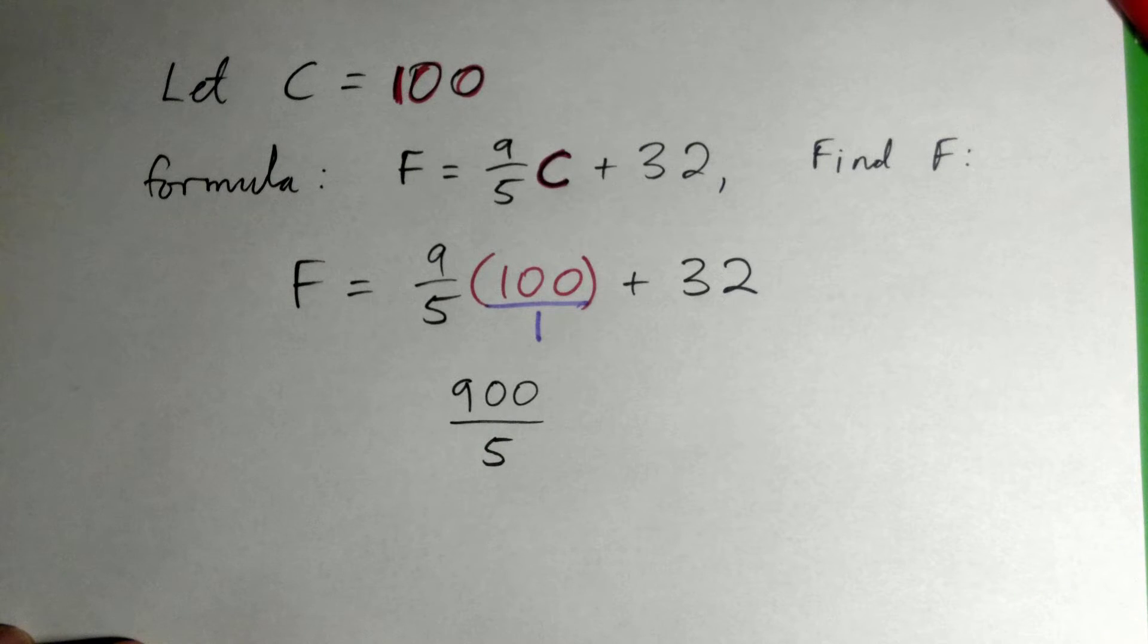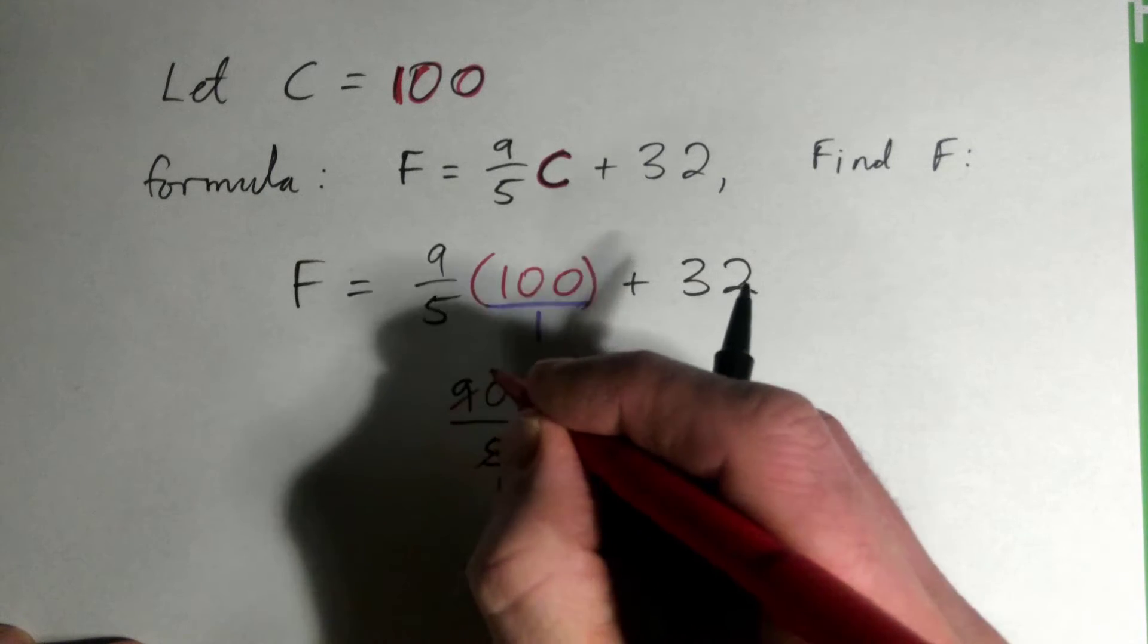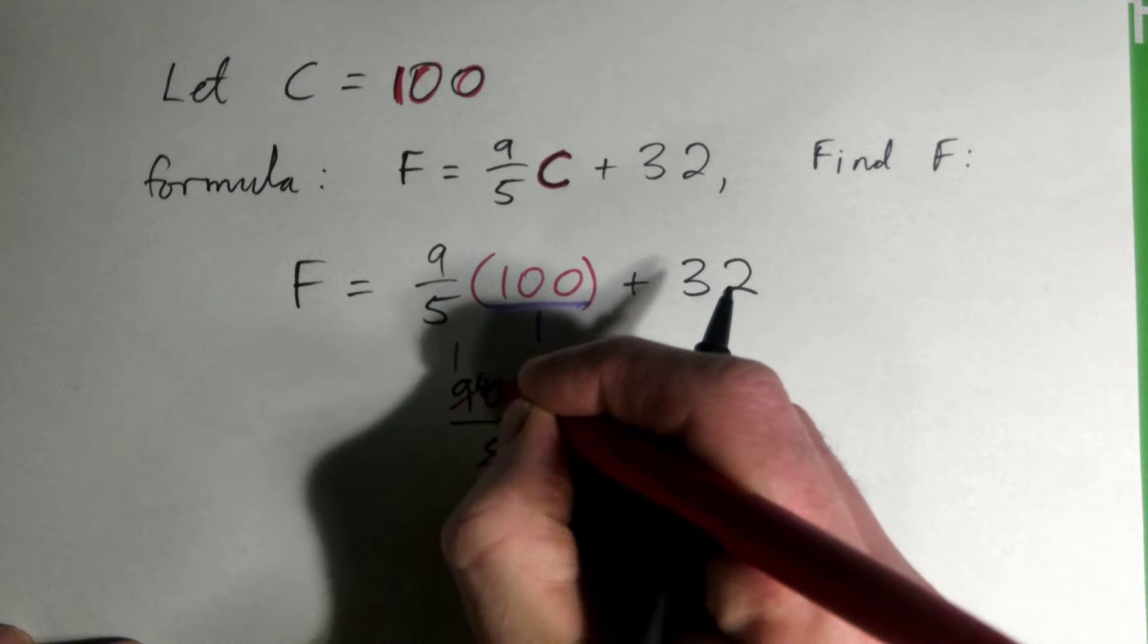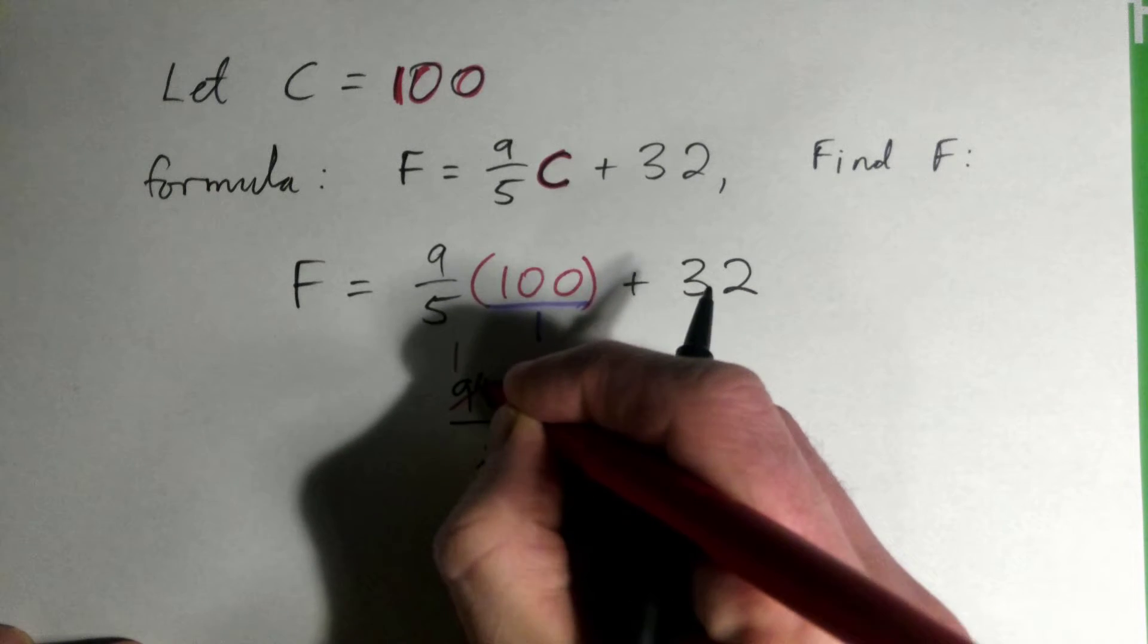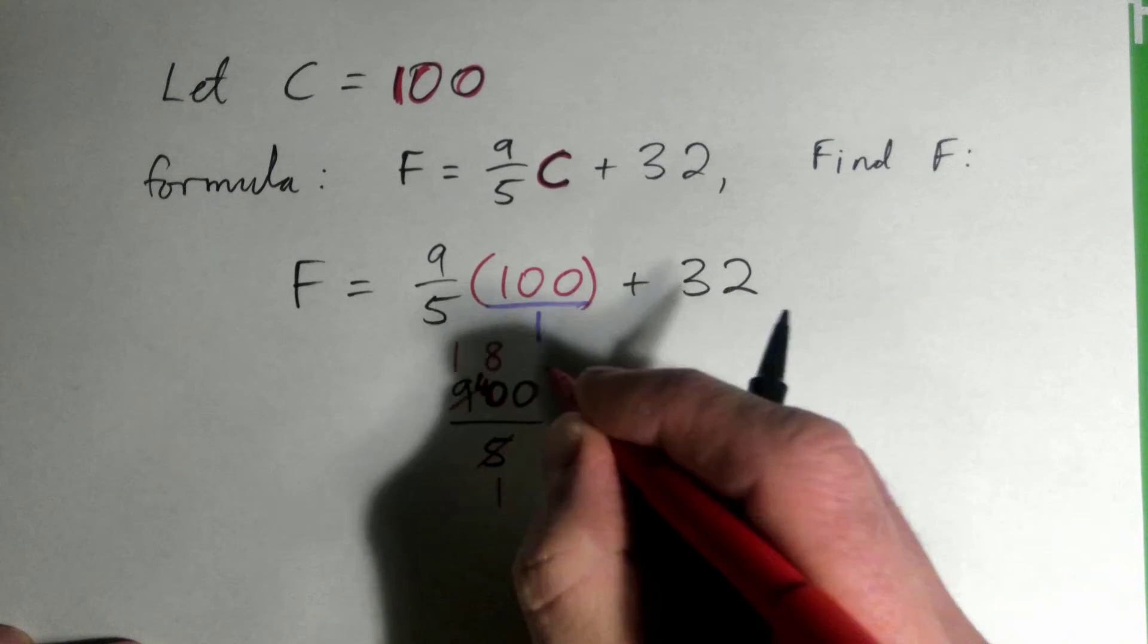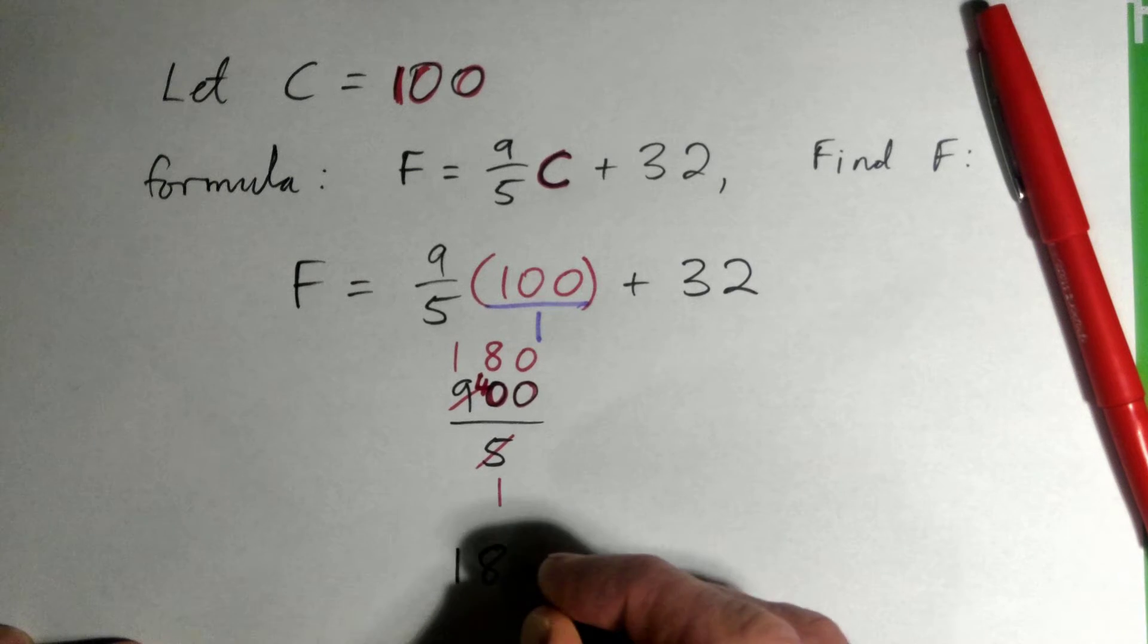So 5 into 5 goes once. 5 into 9 goes one time, remainder 4. What's 5 into 40? Eight. Good. 5 into 0? Good. So this thing simplifies to 180.